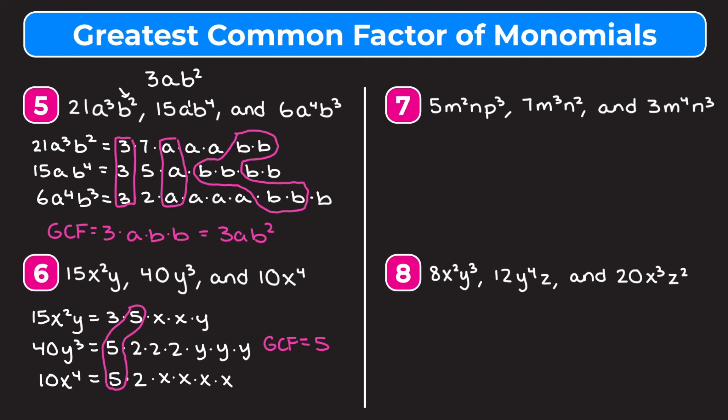Using the shortcut: GCF of 15, 40, and 10 is 5. x doesn't show up in the middle term, and y doesn't show up in the third term, so neither variable goes in our answer. We get a greatest common factor of 5 either way.